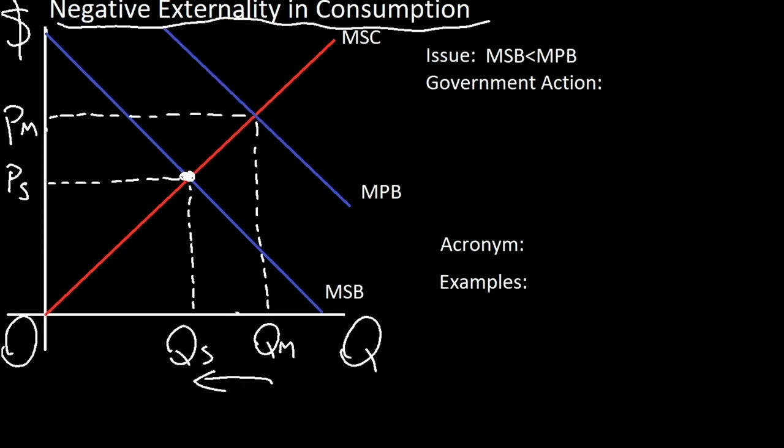So finally we have a negative externality in consumption, where we have two marginal benefit curves. Marginal private benefit and marginal social benefit, where the private benefit is larger than the social benefit. This refers to the consumer as we say consumption, where a person's personal benefit is greater than society's benefit. A great example of this is cigarettes, where someone has to huff in all of the smoke that you create for your own pleasure.